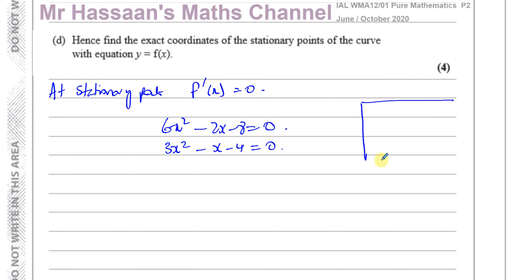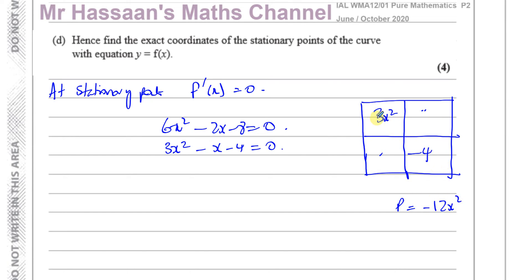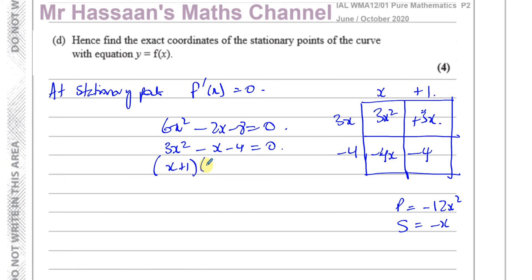We can factorize using the grid method: 3x squared times minus 4 gives minus 12x squared, and we need two terms summing to minus x, which are minus 4x and plus 3x. Factorizing gives (x plus 1)(3x minus 4) equals zero. So x equals minus 1 and x equals 4 over 3 are the x values of the stationary points.